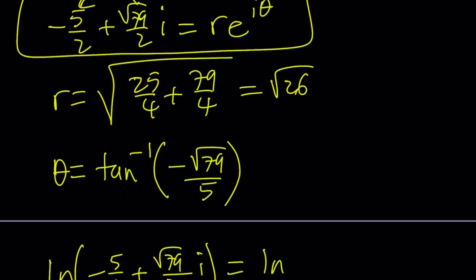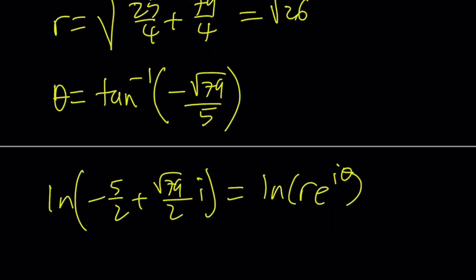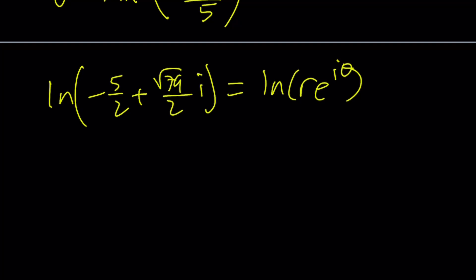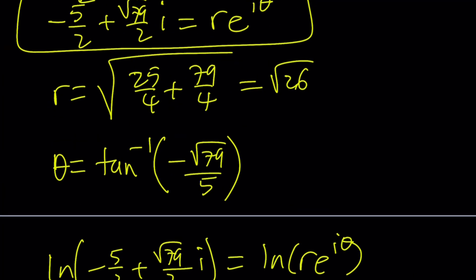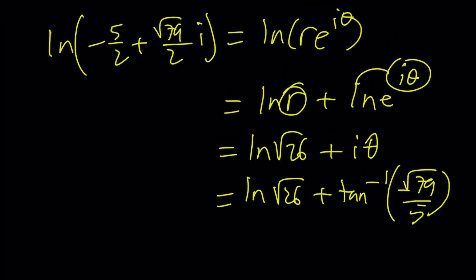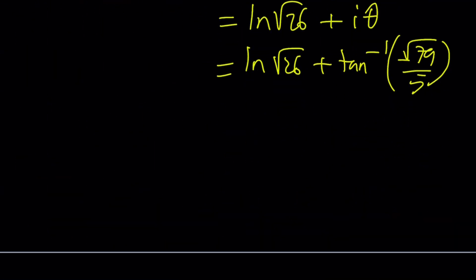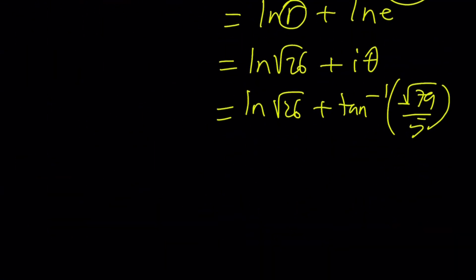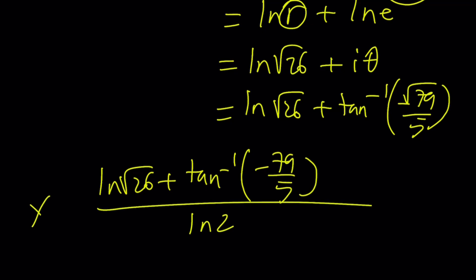r times e to the power i theta. When you ln this, you're going to get that. But when you ln them, you can go ahead and separate these first. And then ln r, r is just going to be, we already know that it's square root of 26. And then this is just going to be i theta. But theta is the tan inverse of something. So we can also replace it with that. And we get the ln of our number right away. But we have to divide by ln 2. So let's go ahead and find the answer. We're going to take this number divided by ln 2. And that's going to be the other x value. Obviously, you can also add multiples of 2 pi, so on and so forth.